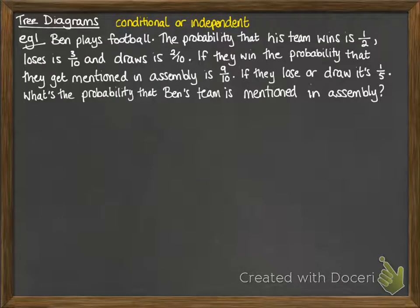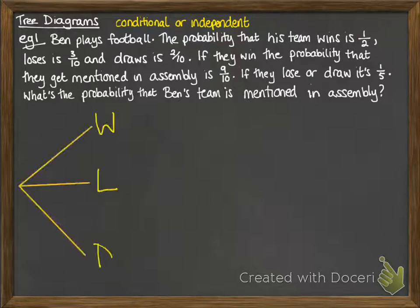We'll have a look at this example. Ben plays football. The probability that his team wins is a half, that they lose is 3 tenths, and a draw is 2 tenths. If they win, the probability that they get a mention in assembly is 9 tenths. But if they lose or draw, it's only 1 fifth. We want to work out the probability that Ben's team gets mentioned in assembly, so let's set this up as a tree diagram.